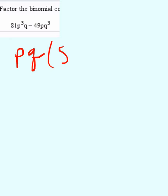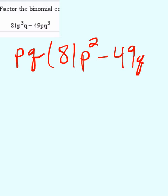So we start by doing that. When we do that, we're left with 81 p squared minus 49 q squared.